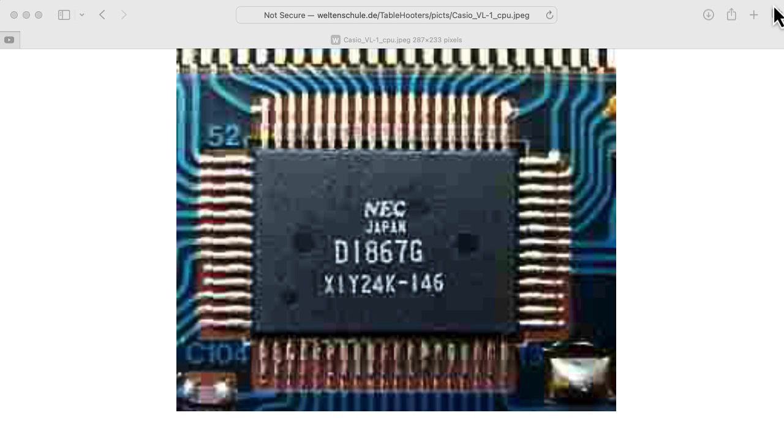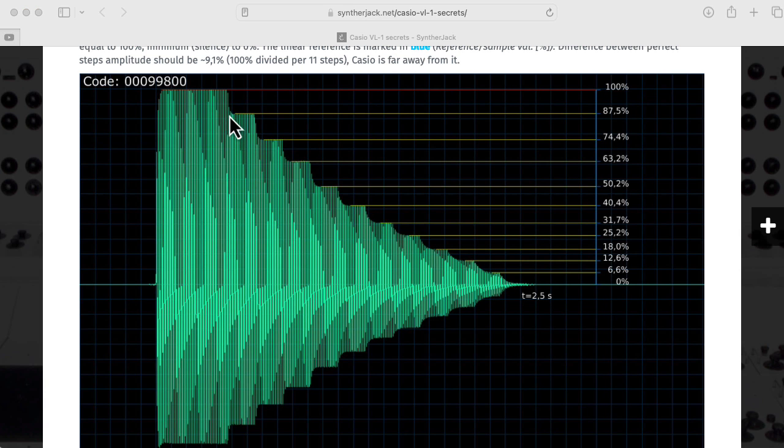The digital chip in the Casio produces one of those waveforms at one of 11 different amplitude levels, but it does something interesting with that output stream.